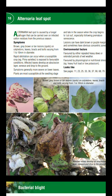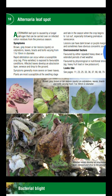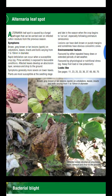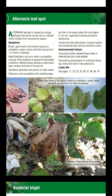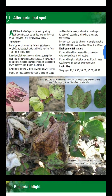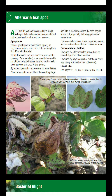Symptoms are generally more severe on lower leaves. Plants are most susceptible at the seedling stage and late in the season when the crop begins to cut out, especially following premature senescence. In Alternaria leaf spot, lesions can have dark brown to purple coloration and sometimes have obvious concentric zones, as you can see in the picture.